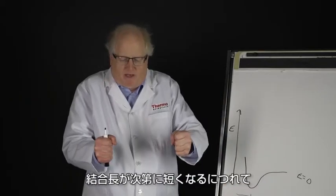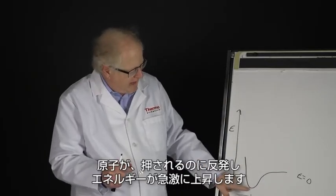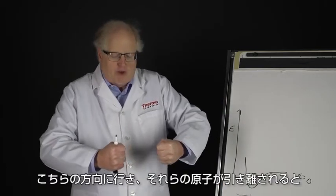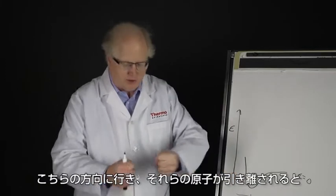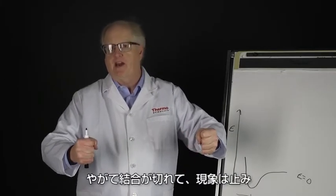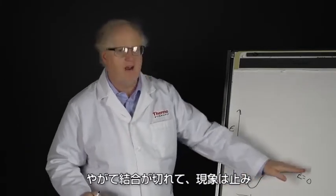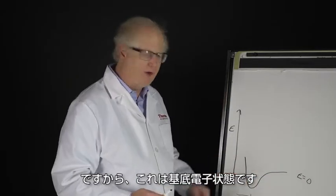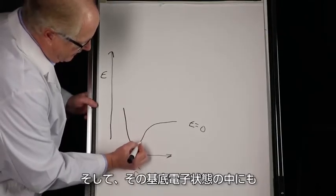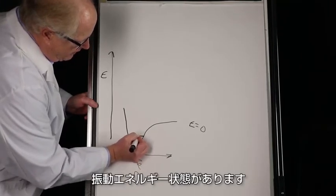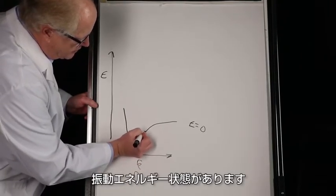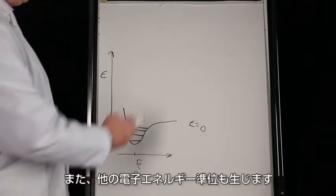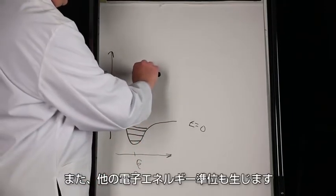This point right here is r sub e, the equilibrium bond distance. As the bond length gets shorter and shorter, the atoms don't like being pushed together, so the energy skyrockets. As you pull them apart, eventually the bond snaps and the energy flattens out. That's the ground electronic state, and within it there are vibrational energy states.